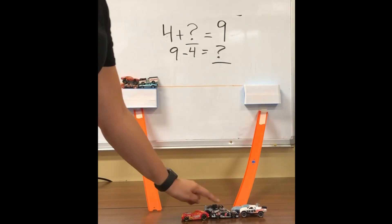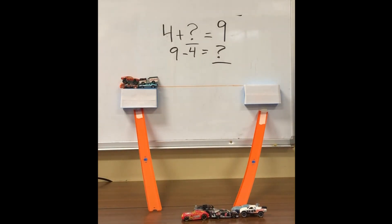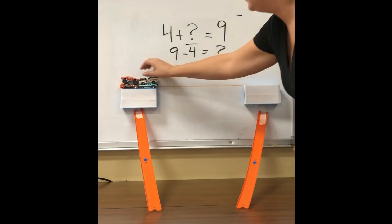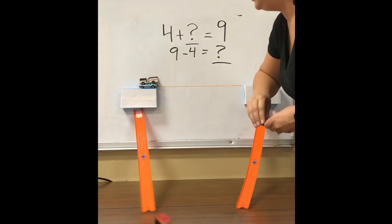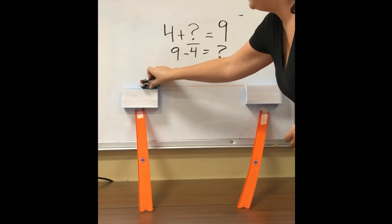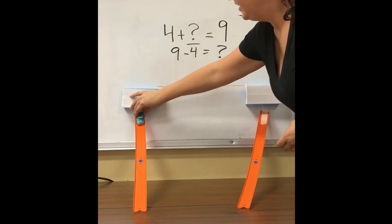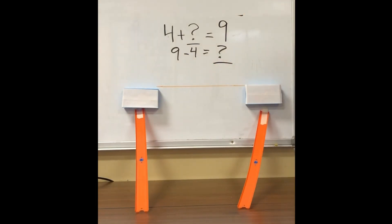1, 2, 3, 4, 5, 6, 7, 8, 9. Our total is 9. So 4 plus 5 equals 9. And 9 minus 4 equals 5.